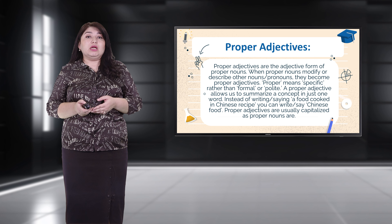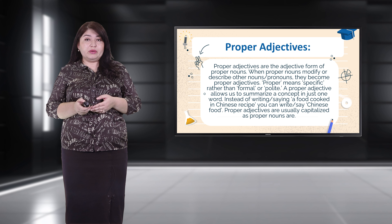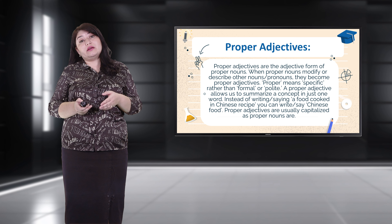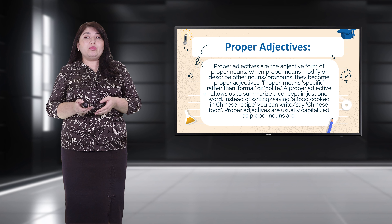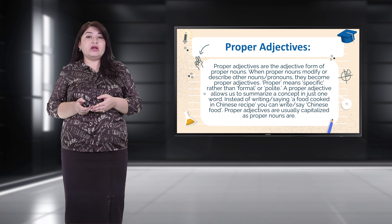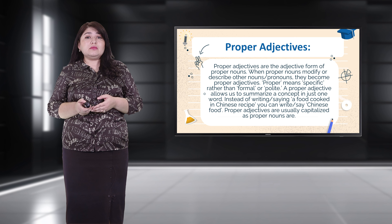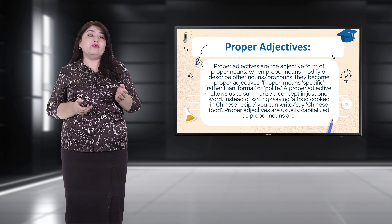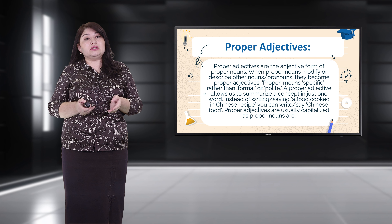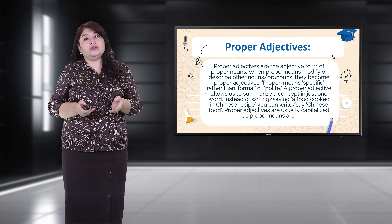Proper adjectives are the adjective form of proper nouns. When proper nouns modify or describe other nouns or pronouns, they become proper adjectives. 'Proper' means specific rather than formal or polite. Proper adjectives allow us to summarize a concept in just one word. For example, instead of saying 'a food cooked in China's recipe,' you can say 'Chinese food.' Proper adjectives are usually capitalized, as proper nouns are. For example: 'American cars are very strong' or 'Chinese people are hard workers' or 'I love KFC burgers.'